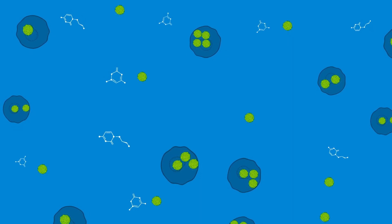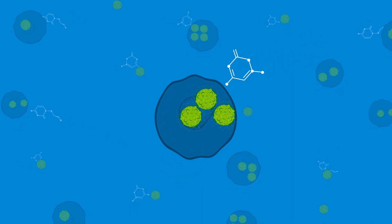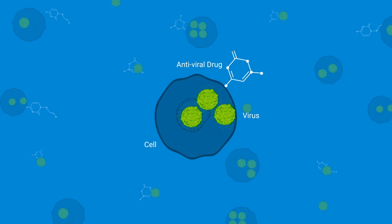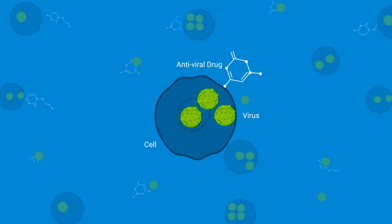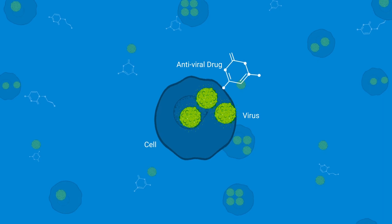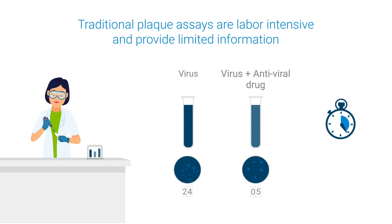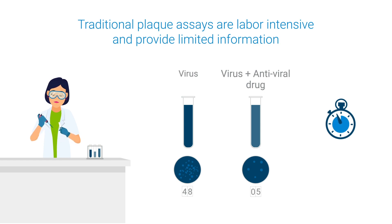Cell-based assays are critical for antiviral drug research because they make it possible to investigate the drug's impact over the entire life cycle of a virus. Traditional plaque-based assays require manual counting of plaques that form days to weeks after infection and do not provide information on the antiviral drug's mechanism of action.